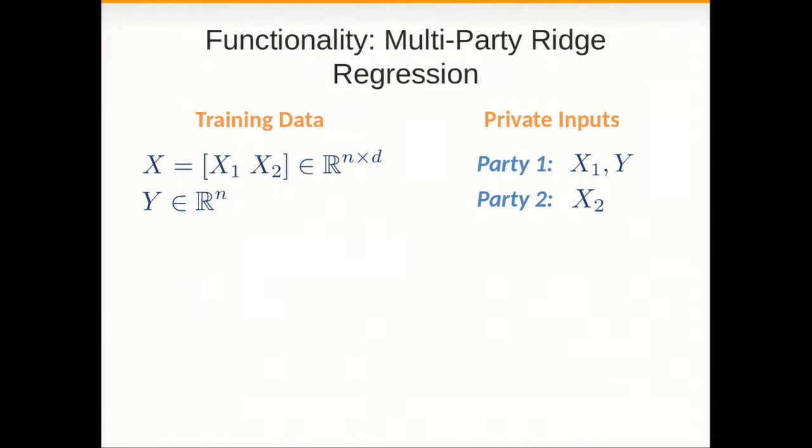What is this ridge regression that we implement? We have a dataset that is vertically partitioned among several parties. Let's say we only have two for simplicity. So X is columns X1 held by party one followed by columns X2 held by party two and then Y is the column we want to predict which is held by party one.